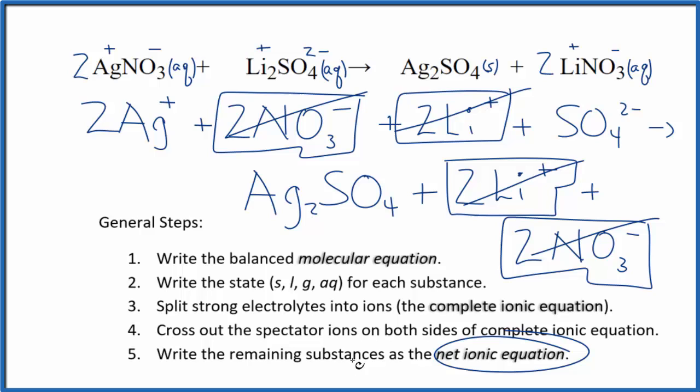What's left? That's the net ionic equation for AgNO3 plus Li2SO4. I'll clean this up and write the states.